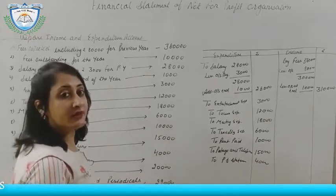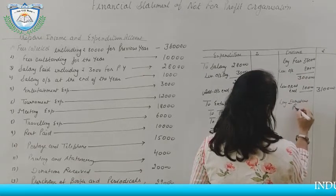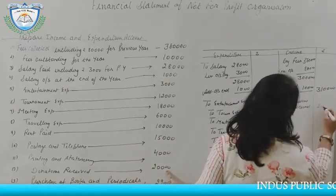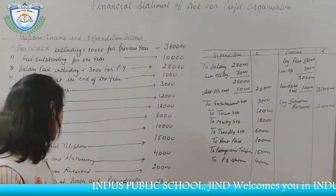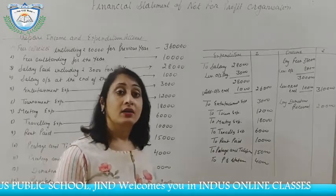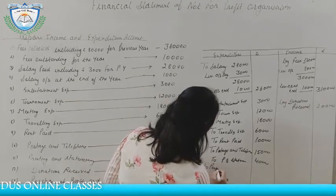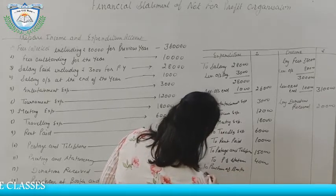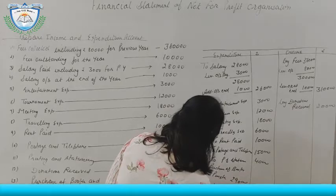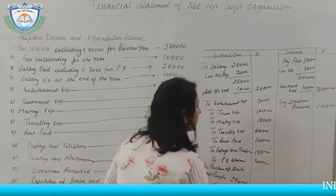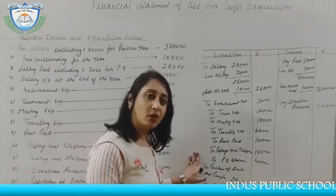Donation received is income for the organization and will be taken on the credit side — rupees 20,000. Next, purchase of books and periodicals totals rupees 29,000, including rupees 19,000 for the purchase of books. Books are assets — they are capital in nature — so the book purchase portion of rupees 19,000 will not be taken in the Income and Expenditure Account. Only the remaining charges of rupees 10,000 (periodicals) will be shown as an expense.